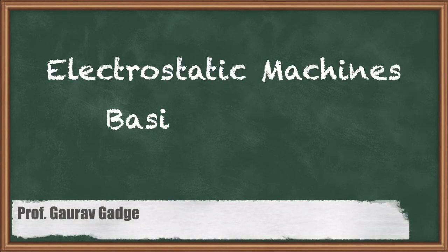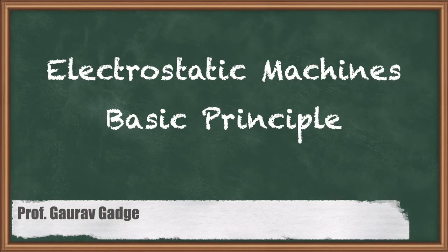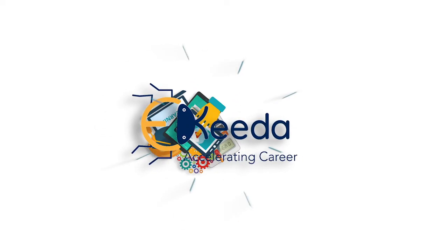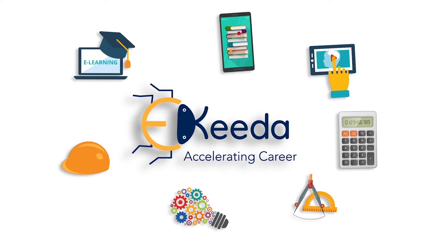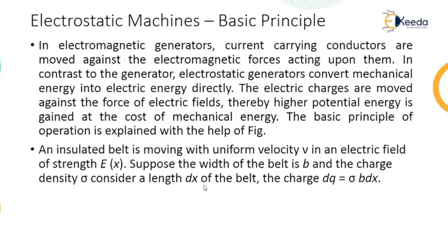Hello friends, in this lecture I am going to discuss the basic principle of this electrostatic machine. In electromagnetic generators, current carrying conductors are moved against the electromagnetic forces acting upon them. That is the function or principle of a generator.